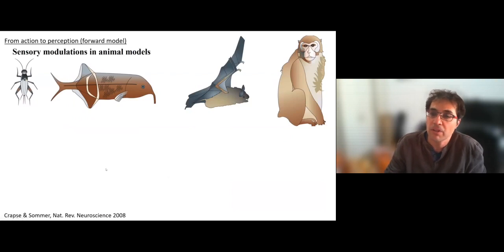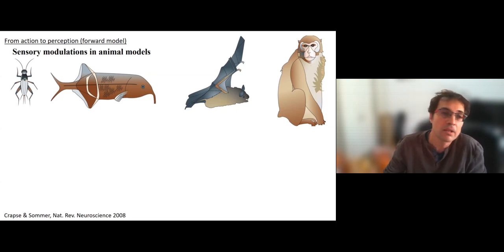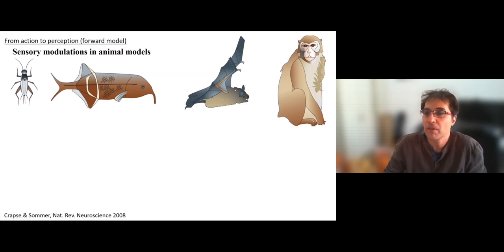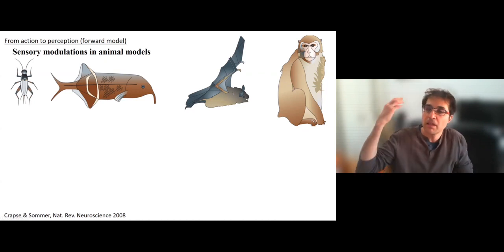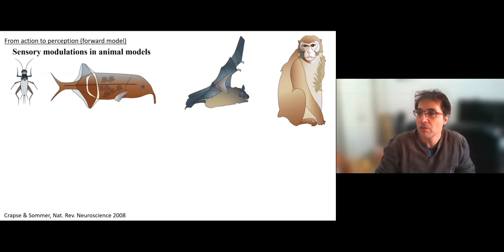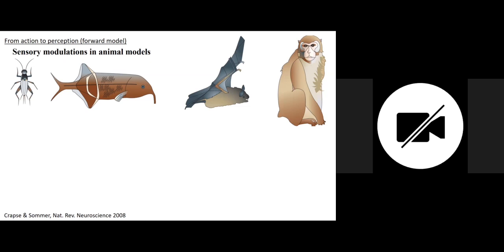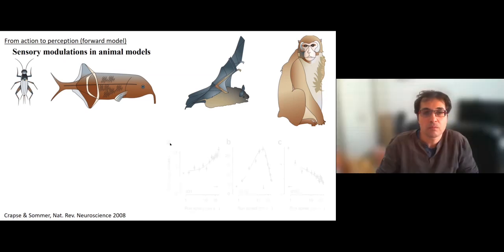We'll start with the direction from action to perception. It has been shown in the literature that voluntary actions can modulate both neural activity in sensory regions and also our perception. This has been shown in various animals from crickets to electric fish, bats, and monkeys. Taking the example of the bat — similar for the cricket — when they emit a sonar, they voluntarily generate a sensory stimulus. At the same time, there's an attenuation of neural activity in their auditory cortex, and this attenuated response is several tens of dB.